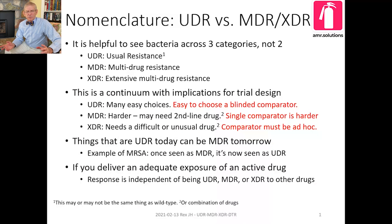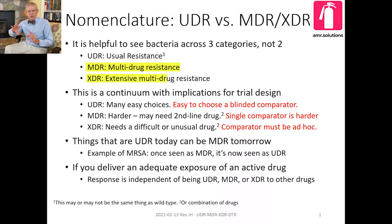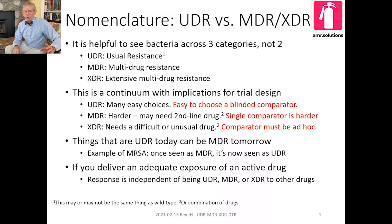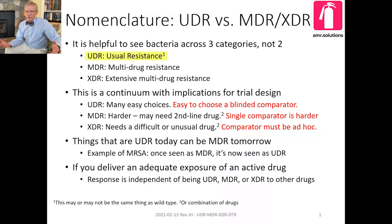Nomenclature: UDR, MDR, and XDR. Useful bits of shorthand to know, so let's take them and break them apart. It's helpful to think about bacterial resistance as having three categories. The two most commonly used are MDR and XDR — multidrug resistant and extreme drug resistance. The third category is what you have when it's not the first two: usual drug resistance.